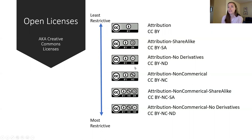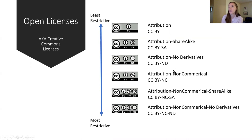Each type of license has slightly different requests of the user. All of them ask that you attribute the work by making clear who the original creator was, and they're listed here from least restrictive to most restrictive. For CCBY, all you have to do is give attribution and you're otherwise free to do all five R's. For CCBYSA — share alike — you're allowed to modify the work, but the new work must be shared with the same license as the original.